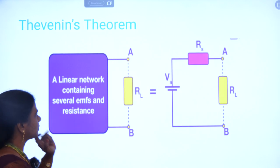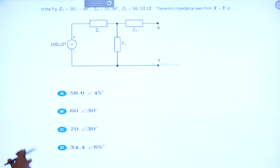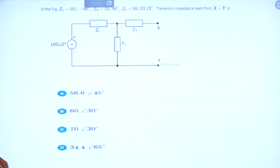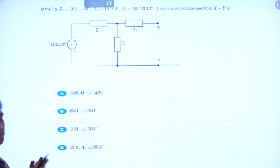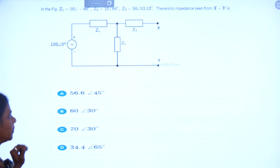Now we can go for some example problems. I have taken this problem as the example for solving. Here we have given three impedances Z1, Z2, Z3 and the voltage source given is 100∠0°. We have to find the Thevenin's impedance for this particular circuit. Some options are given and we have to solve this problem to find Zth.